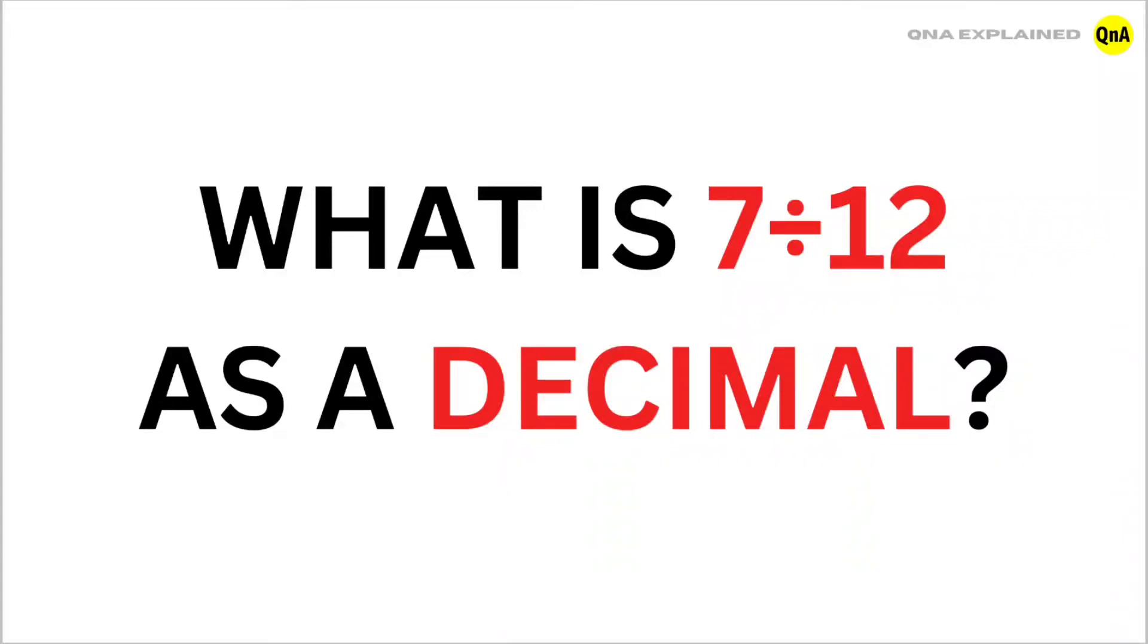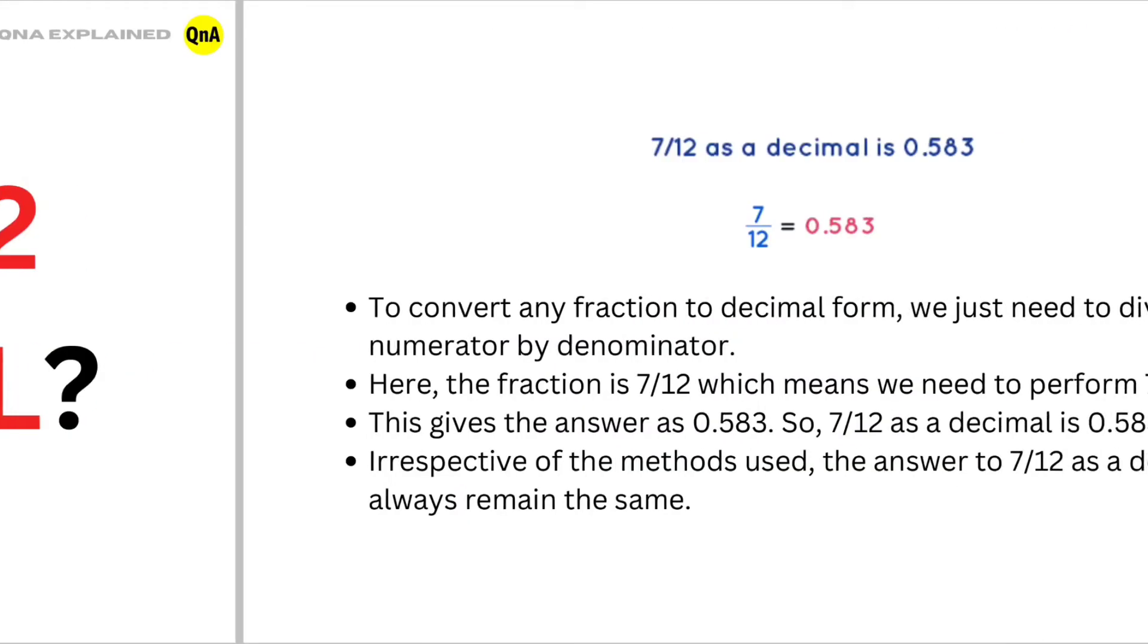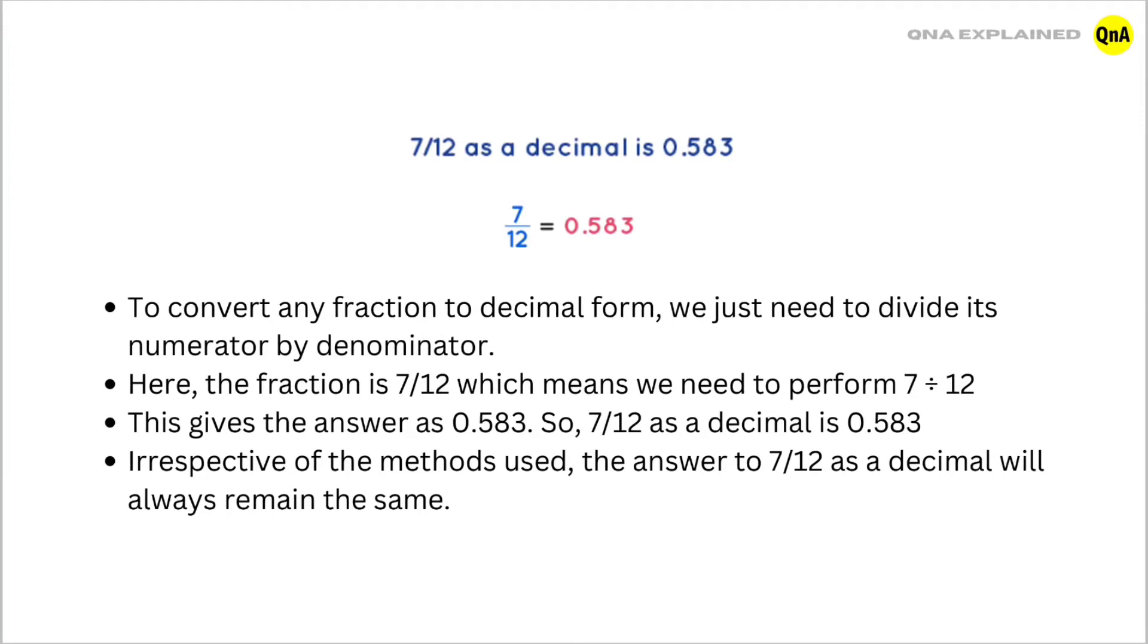What is 7 divided by 12 as a decimal? 7 divided by 12 as a decimal is 0.583. 7 upon 12 equals 0.583.